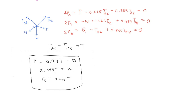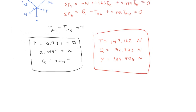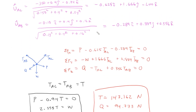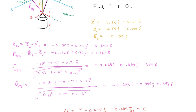We can solve for T first since we know W, then plug those values into the other equations to find P and Q. After solving these equations, we get values for T, Q, and P. We only need P and Q to solve this problem, but we also found the tension force within the cables.